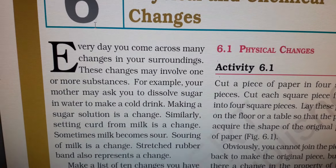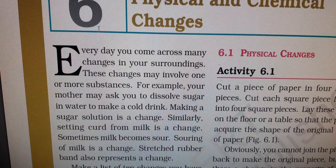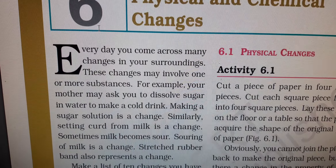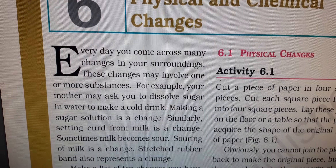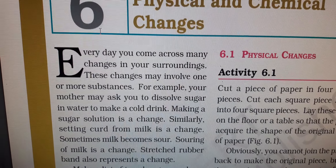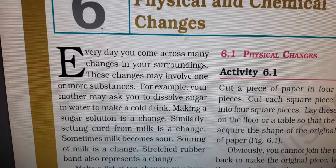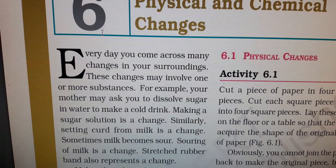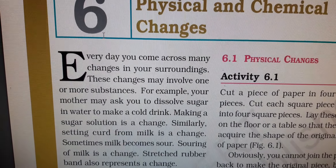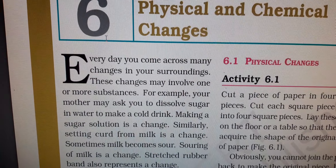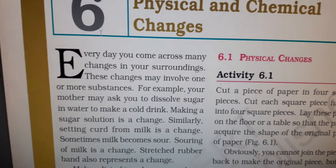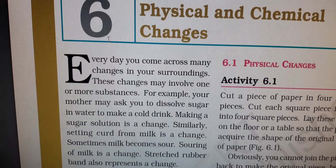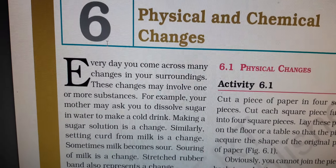Some changes are fast, like melting of ice — if you keep some ice you will see that it melts. Burning of firecrackers is also fast; immediately as you touch the fire, the firecracker starts burning. So that is a very fast change. So some changes are slow and some changes are fast.